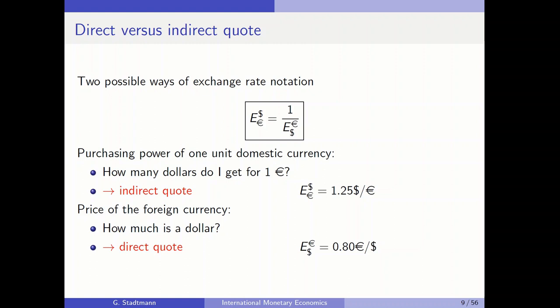In this lecture I use the direct quote, because then we can treat the foreign exchange market the same way we treat the apple market. In the apple market we put the price of the apple on the vertical axis and the quantity on the horizontal axis, with a supply and demand curve. Similarly, from a European perspective: the price of one US dollar on the vertical axis, quantity of US dollars traded on the horizontal axis, with supply and demand curves for US dollars.